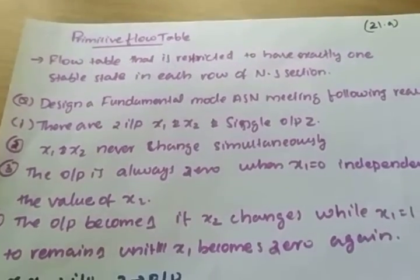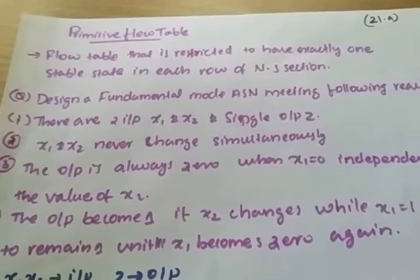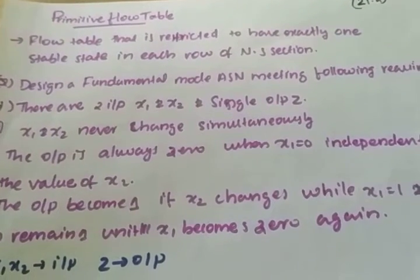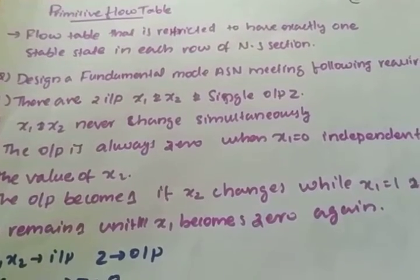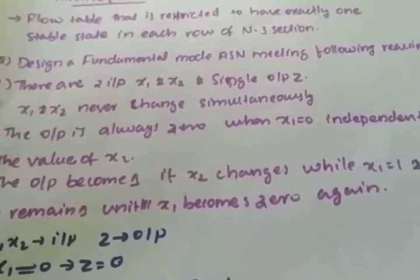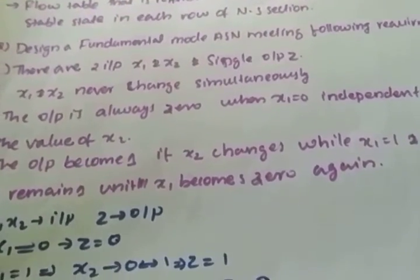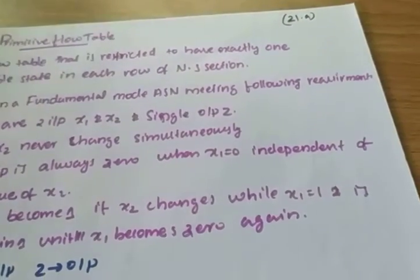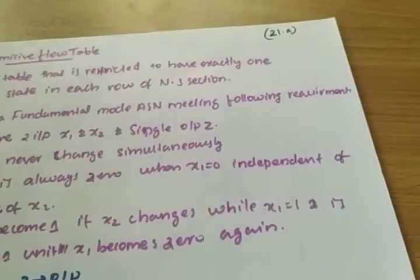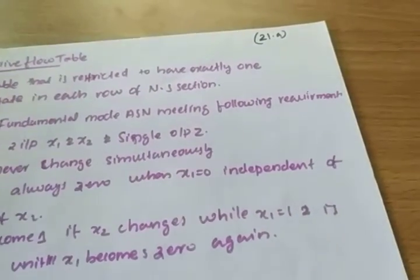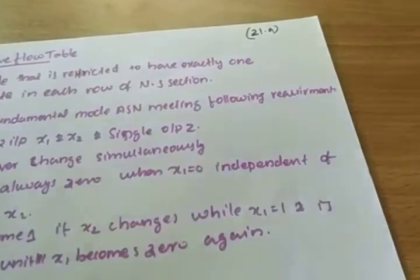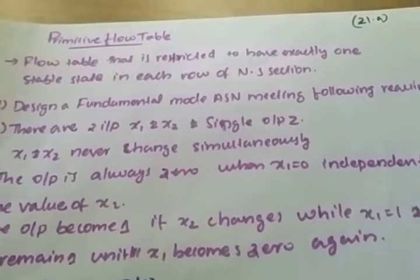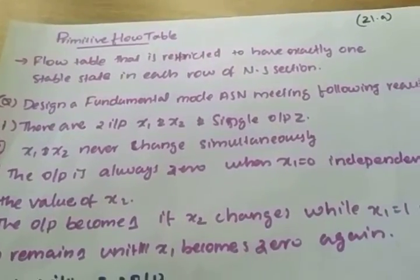Today I will discuss the Primitive Floor Table. In the second module, the remaining portions are: Primitive Floor Table, State Assignment, State Reduction, Adjacent Diagram, and the Final Transition Table. We will also compare digital circuits and logic circuits. These are the remaining portions.